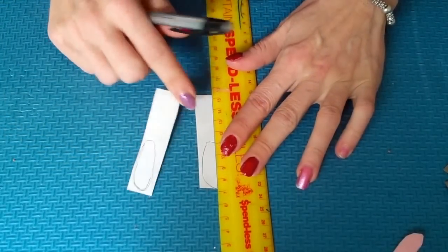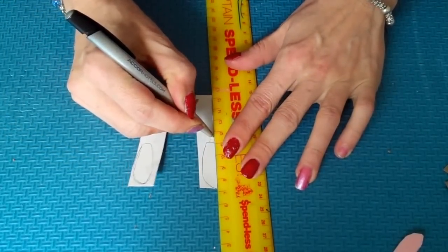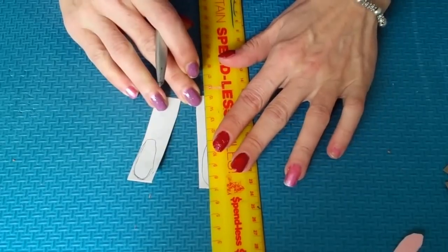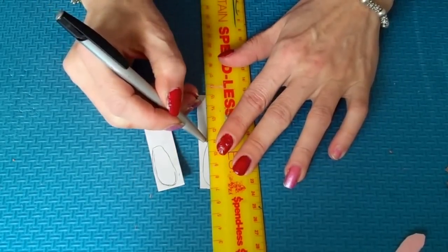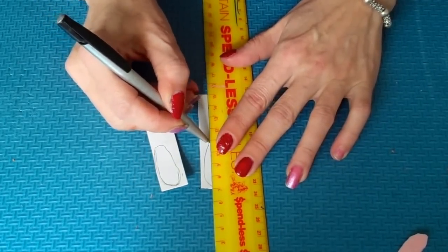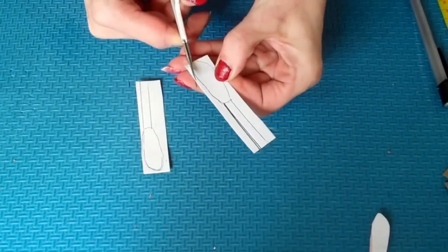Next, using a ruler, I just want to make a line going down. Next I want to cut those out.